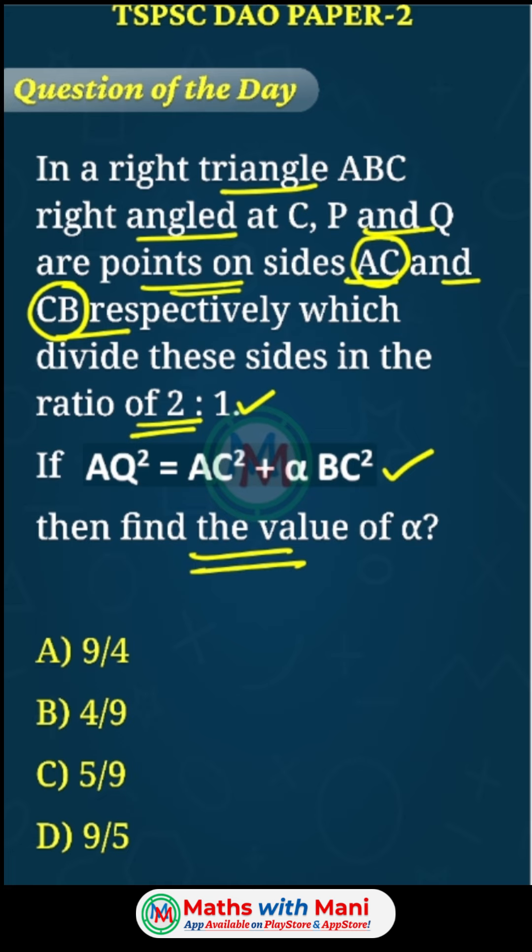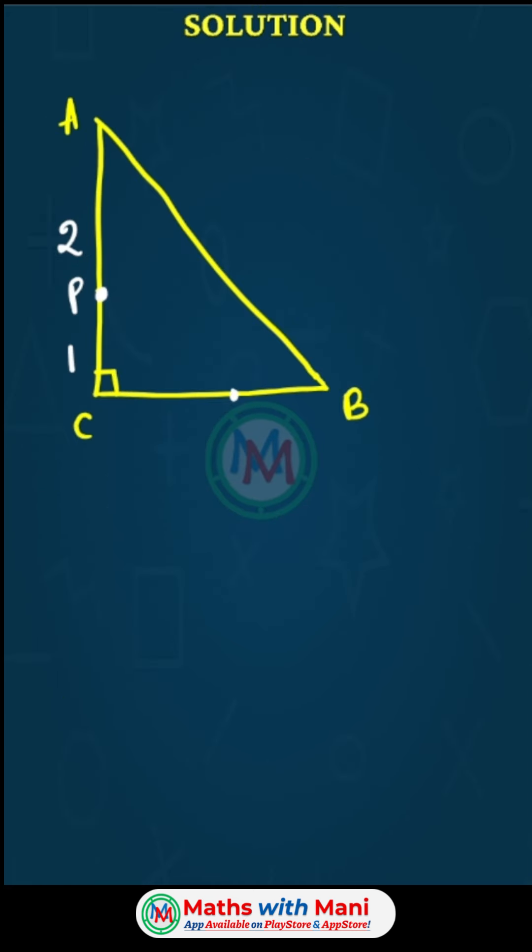We need to find AQ². We're given AC² and BC². So I'll mark this as 2x, this as x, this as 2y, and this as y. By Pythagoras theorem, AP² + PQ² = AQ².